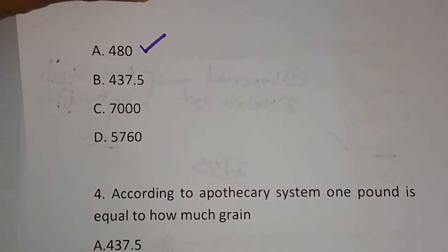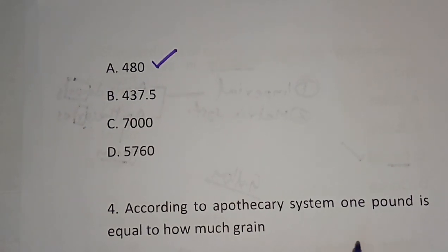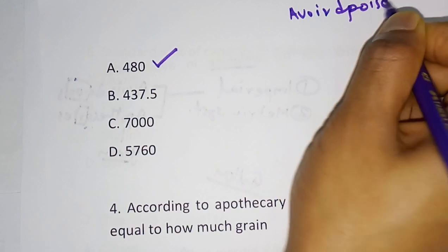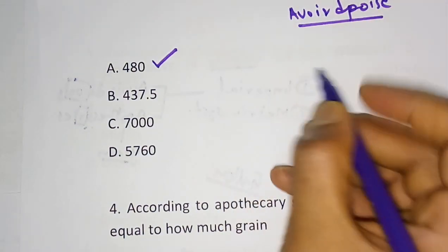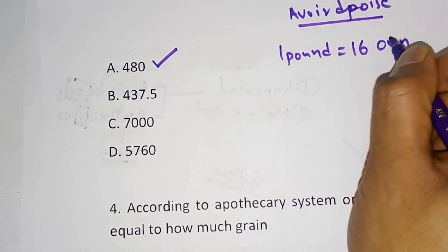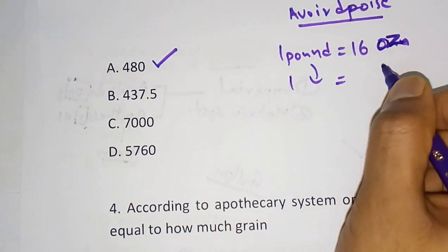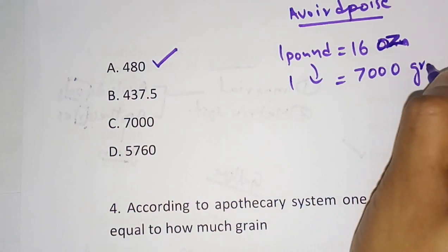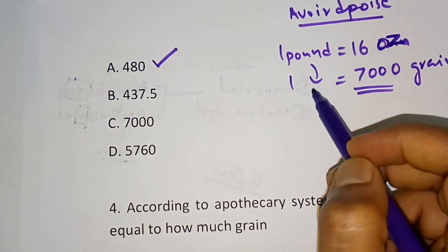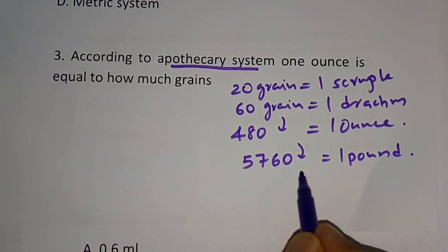Now let's also look at the avoirdupois system. In the avoirdupois system, 1 pound is equal to 16 ounces, which is also equal to 7,000 grains. Compare this to the apothecary system where 1 pound is equal to 5,760 grains. These are important differences between the two systems.